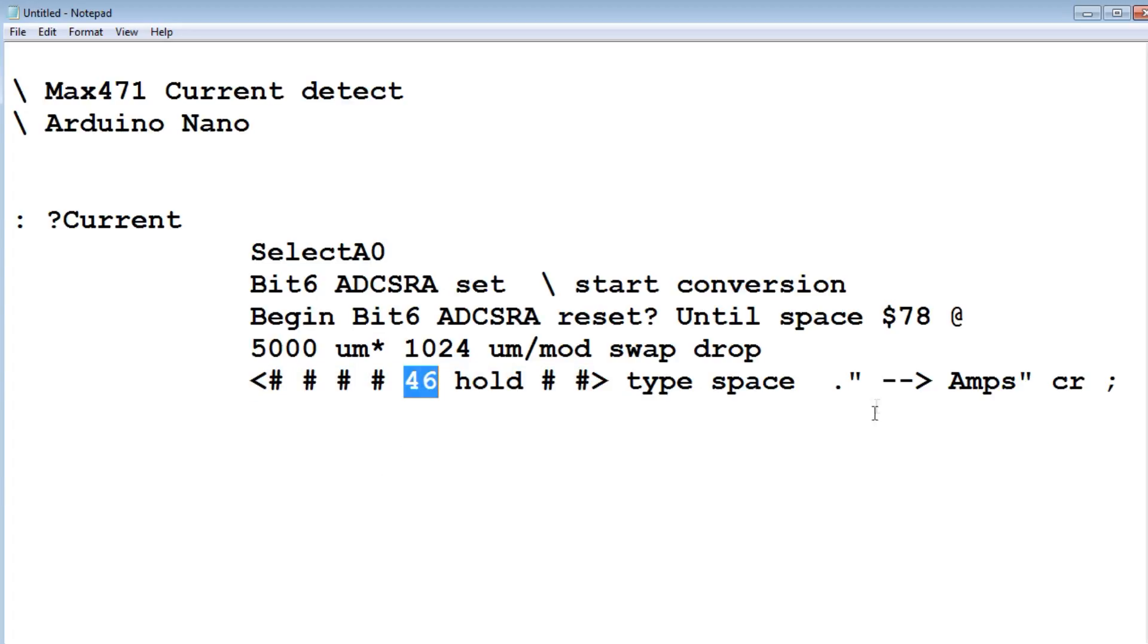Then it will print the value of the current and then it will print amps. That's the program. If you want to run this continuously, we just type question mark current many, and that will run the program continuously. We'll get a continuous readout of the current flowing through the load.